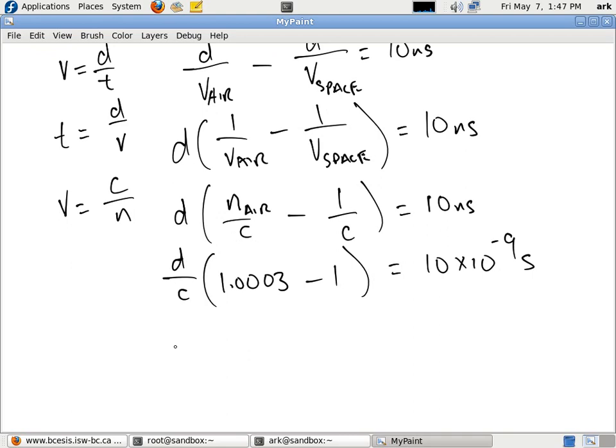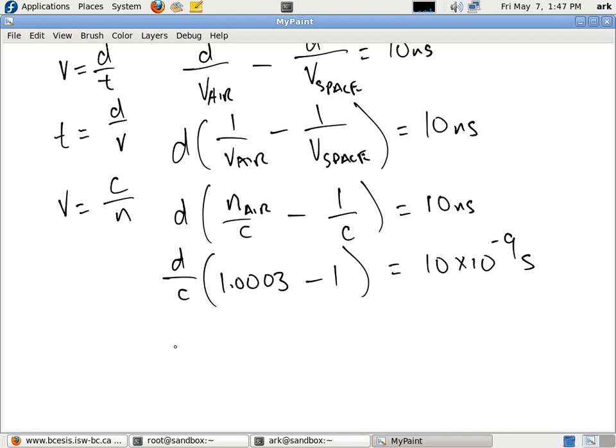Now, what we can do is simply find our final distance of this race by multiplying both sides by c, doing this subtraction, and we get c times 10 times 10 to the power of negative 9 seconds, divided by, now 1.003 minus 1 is simply 0.003.